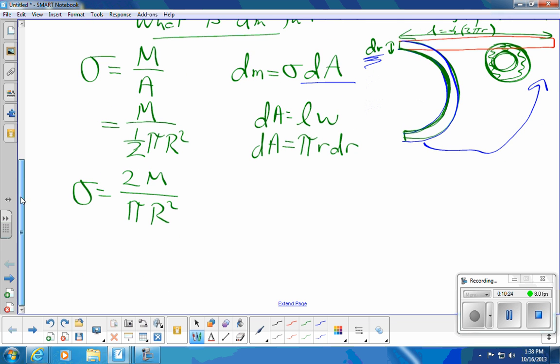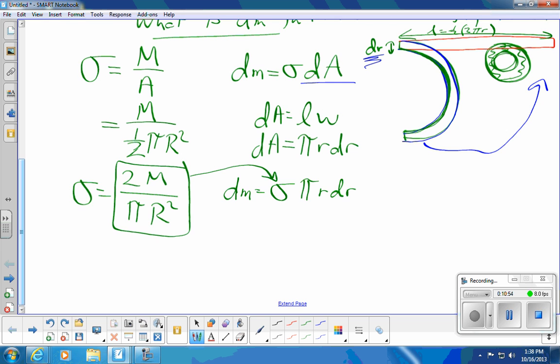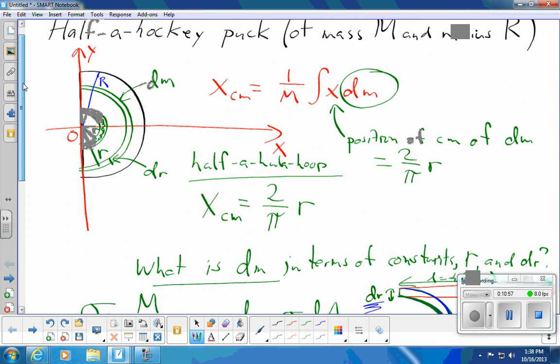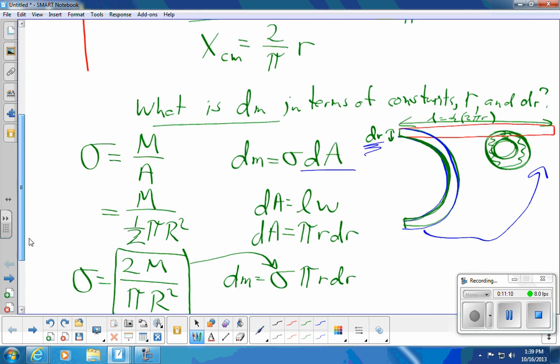So now I can say the mass, dm, is σ times dA. But dA is π r dr. Okay. σ, by the way, I will be subbing in all this stuff for σ. That's all constants. So I now have dm expressed in terms of constants, π, which is a constant, r, and dr. My only variable is r. If I go back to my original formula, remember that I'm going to be subbing in for x, the position of the center of mass. I'm going to be plugging in 2 over π times little r. So I now have things to plug in in my original formula where my variable of integration is going to be r. Let me rewrite the formula down here.